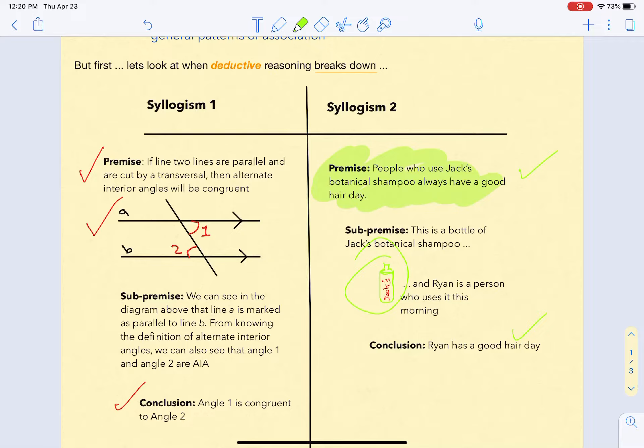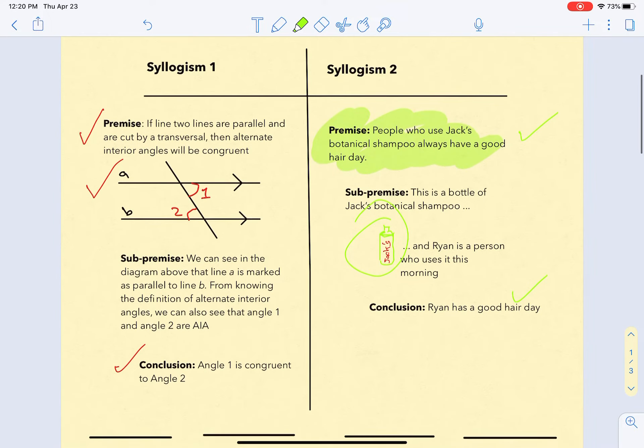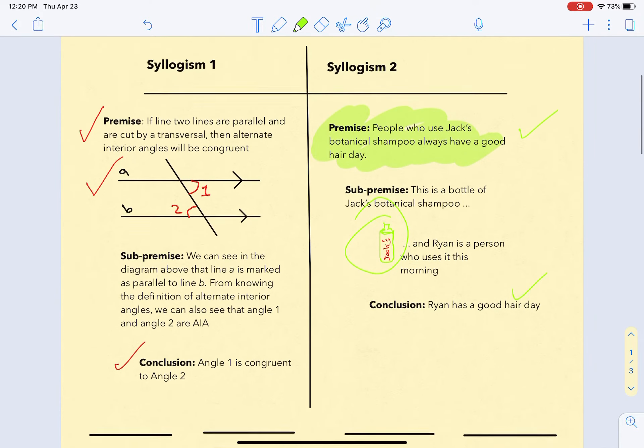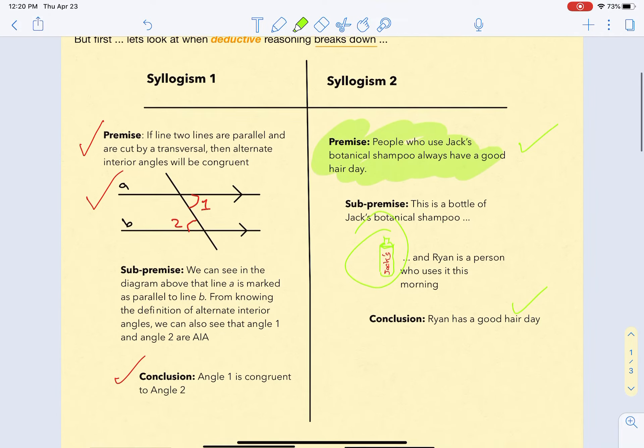That does not strike me as nearly as reliable a premise as the first syllogism. If two lines are parallel and cut by a transversal, then alternate interior angles will be congruent - that feels very reliable. The thing about Jack's Shampoo, not so reliable. If you have a questionable opening premise, the whole deductive reasoning pattern breaks down.